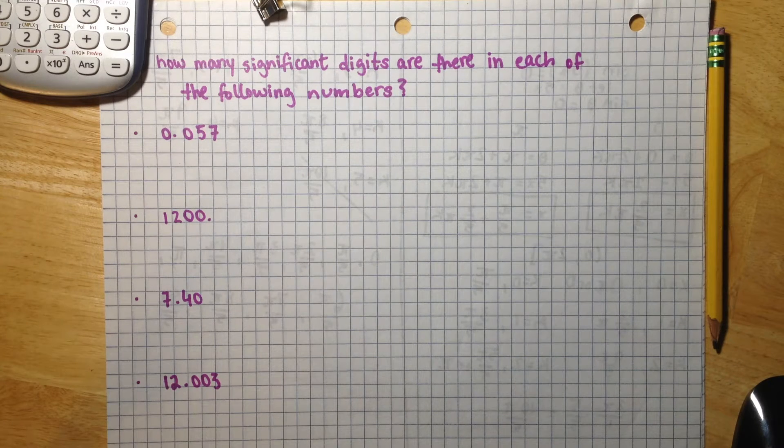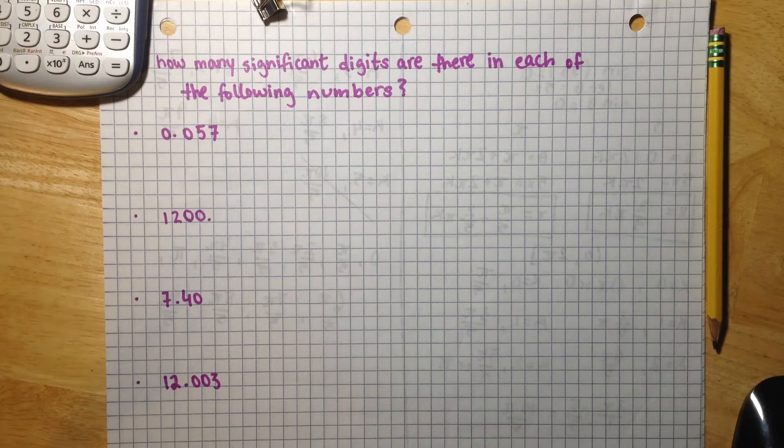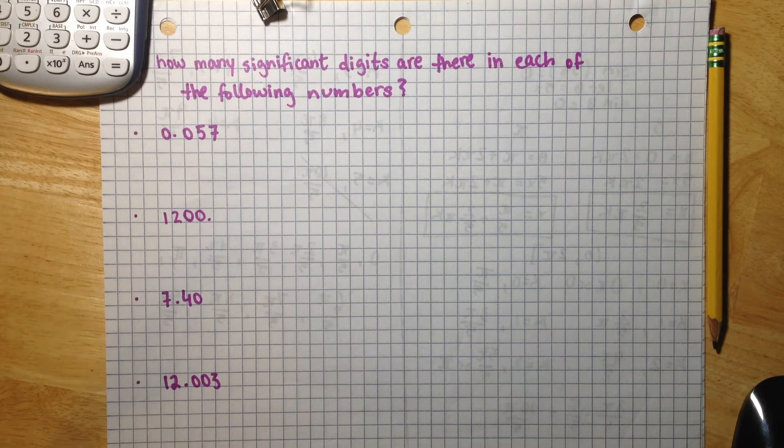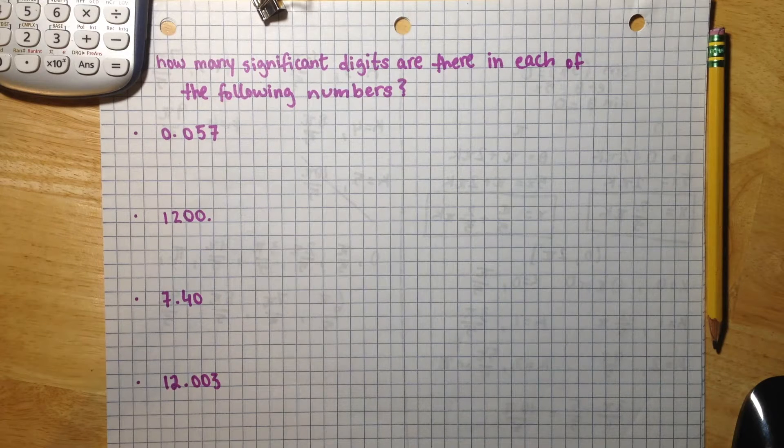We are asked to find how many significant digits there are in each of the following numbers. So the first number is 0.057.